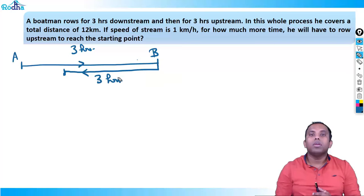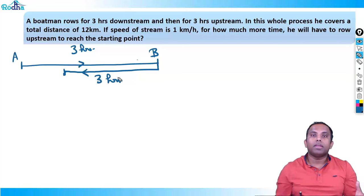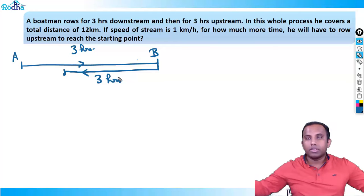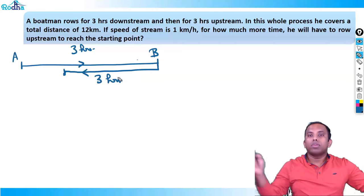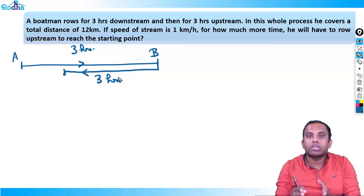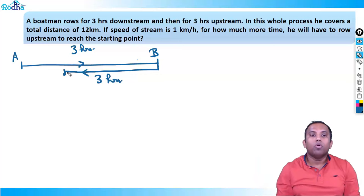The logic here is: while going upstream for 3 hours, he cannot cover the whole distance. Why? Because in going downstream the speed of the boat is more. So if he has rowed at some speed, downstream it is faster — in 3 hours it covers more distance — while coming upstream the boat is slower, so in 3 hours it covers lesser distance compared to downstream.